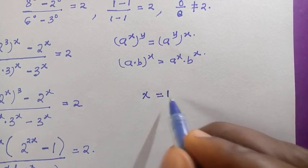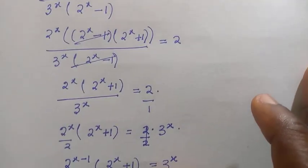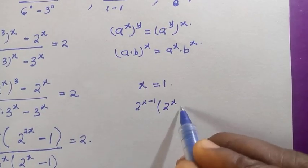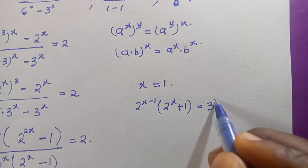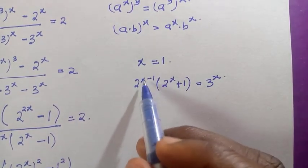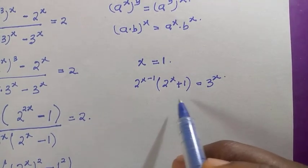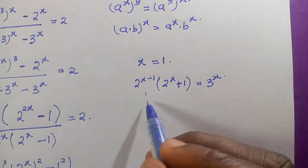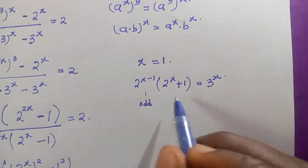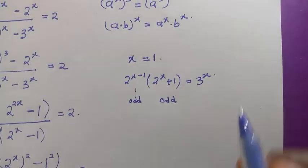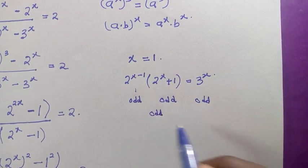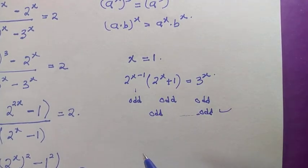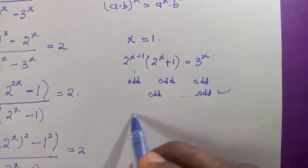Let me check when x equals 1 in the equation 2 raised to power x minus 1, times bracket 2 raised to power x plus 1, equals 3 raised to power x. Plugging in x equals 1: 2 raised to power 1 minus 1 gives an odd number, the bracket 2 raised to power 1 plus 1 also gives an odd number, and 3 raised to power 1 is also odd. Odd times odd equals odd, so odd equals odd — x equals 1 satisfies this problem.